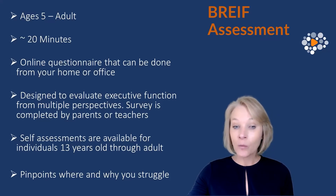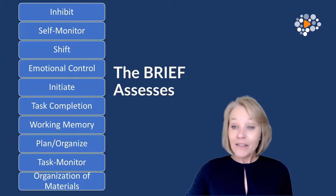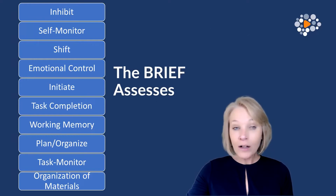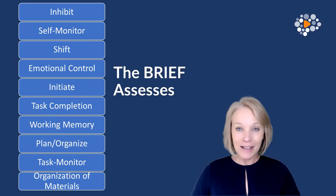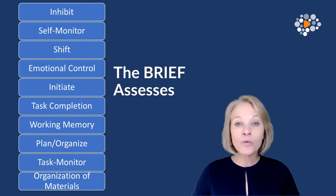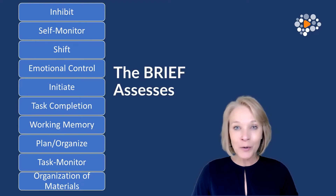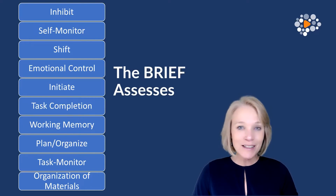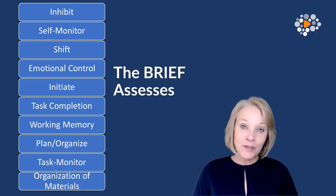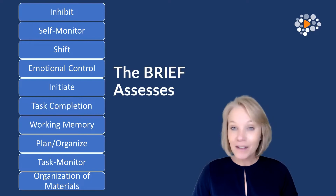The BRIEF pinpoints where and why you struggle. Let's look at the different areas it assesses — all of the different processes of executive function. We look at inhibit: that inhibitory control where Emma's son rushes through work just to get it done, leading to careless errors. For adults, it might look like constantly interrupting people when they're talking, or not thinking about consequences before acting. That is inhibitory control.